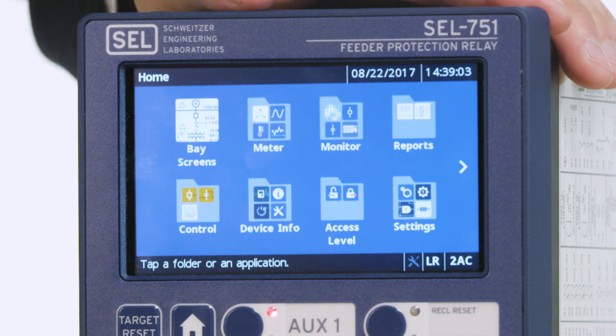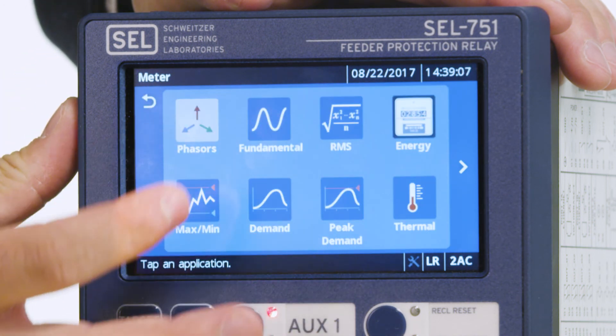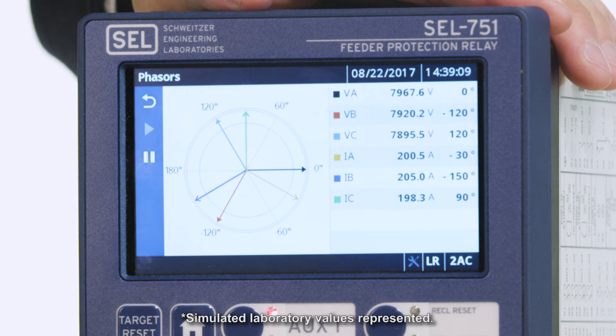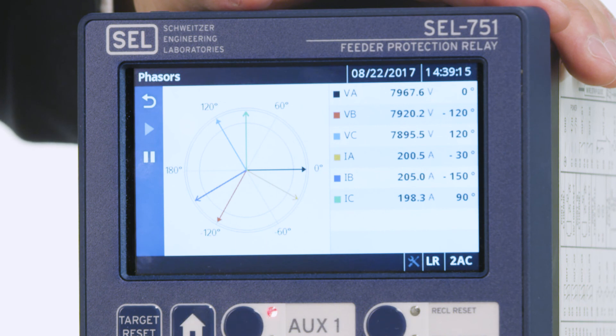Lastly, we will take a look at the Phasers application, which is available under the Meter folder under the Phasers application. In the Phasers application, you can see the voltages and currents along with their magnitudes and angles.